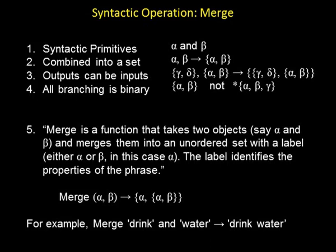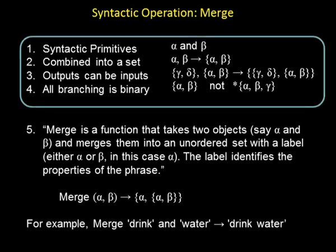My understanding is that merge takes syntactic primitives and combines them into a set. If it's unbounded, the output of a merge operation can be input to another merge operation. On some views this is binary — only two primitives can be combined this way. Sometimes a merge operation creates a set with a label, so for example 'drink water' tells us something about drinking. I want to talk about babies' computations over object representations and suggest that at least for the first four of these properties, we'll see some parallels — if you replace objects for syntactic objects, we might get a pretty good alignment.